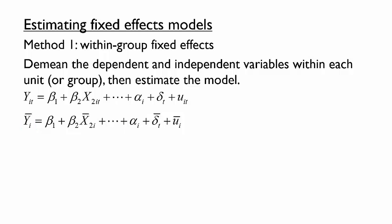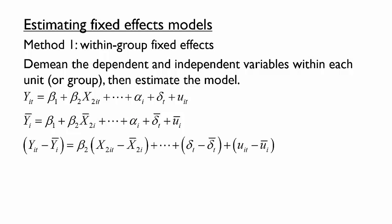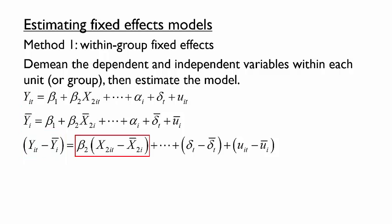Next, we subtract the means from each value, yielding the demeaned model. The term y_it minus y-bar_i becomes the demeaned value of y within a unit or within a group of observations represented by the same individual designated by i. We get demeaned independent variables for the same reason. One important consequence of this subtraction is that the two alpha_i terms cancel out, leaving no fixed effects term in the equation with the demeaned variables. By eliminating the fixed effect terms, we can estimate the parameters simply by using OLS.